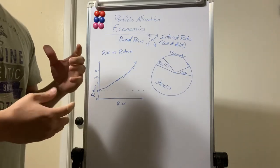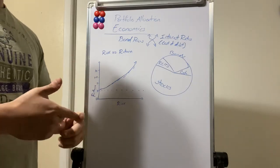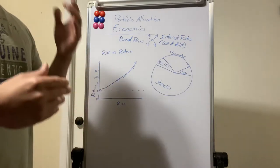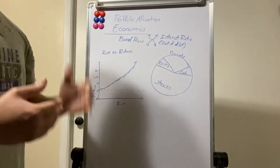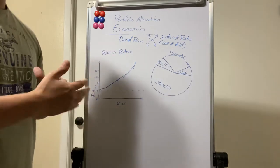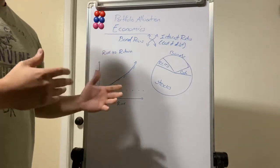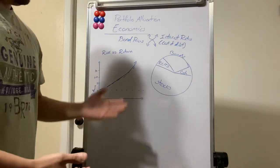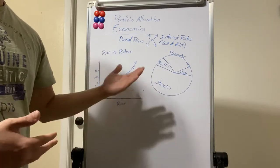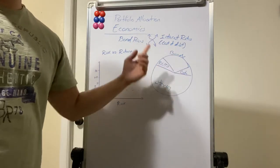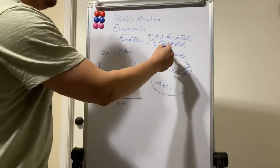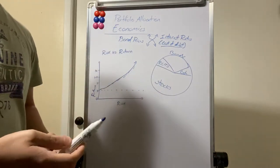Portfolio allocation factors include interest rates, which is the biggest one, along with buy and sell factors. I take a top-to-bottom approach, and for me interest rates are the biggest economic factor when it comes to investing. Interest rates are basically the cost of debt — the cost to borrow. That's the first and most important thing.